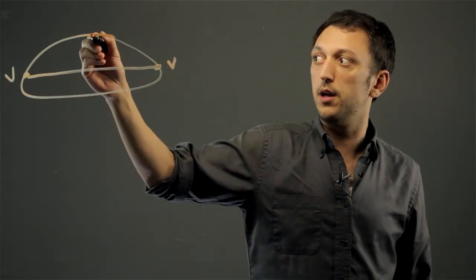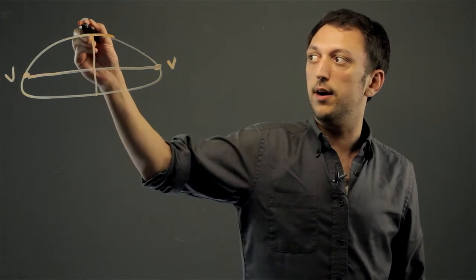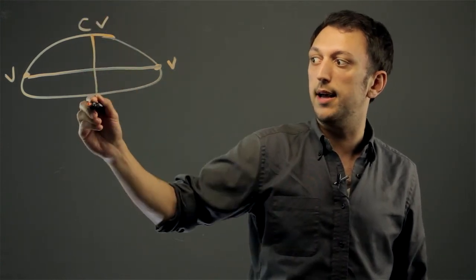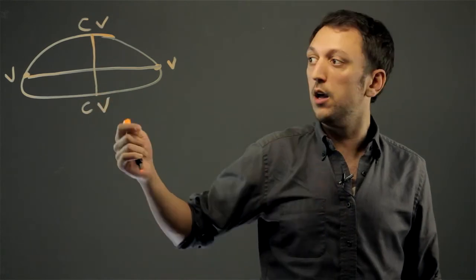Now, if we draw the minor axis, we now have co-vertex 1 and co-vertex 2.